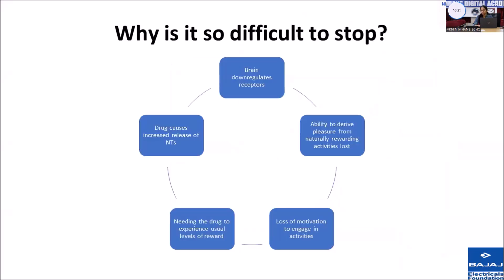Nicotine causes an increase in neurotransmitters, and then the brain would down-regulate these receptors as a compensatory mechanism. What happens is that the ability to derive pleasure from naturally rewarding activities gets lost, making the person not engage in other activities. The person would then require nicotine to even experience normal levels of well-being. That's why it becomes so difficult to stop once it starts and becomes a habit.